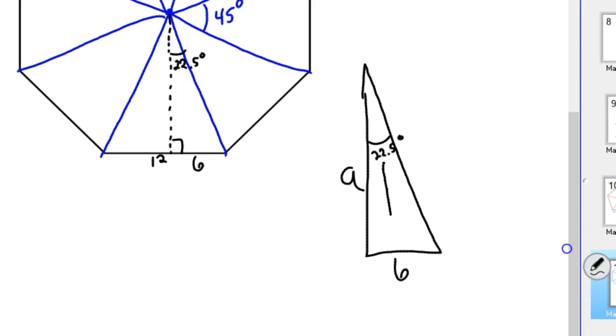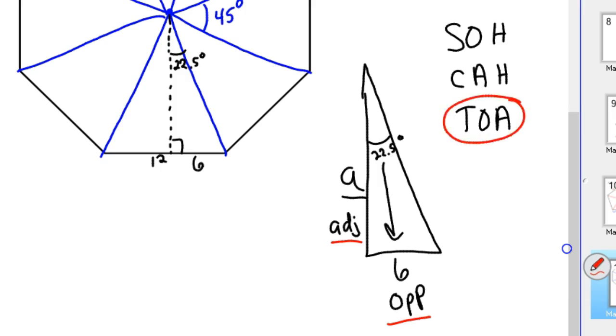Well, from 22.5, 6 is opposite. So that's the opposite side, and A is the adjacent side. If you use SOHCAHTOA, I'll just write it up here again. SOHCAHTOA is sine, cosine, tangent. Sine is opposite over hypotenuse, cosine is adjacent over hypotenuse, tangent is opposite over adjacent. We're given opposite, we have to find adjacent, so we know we're using the TOA part, which is tangent.